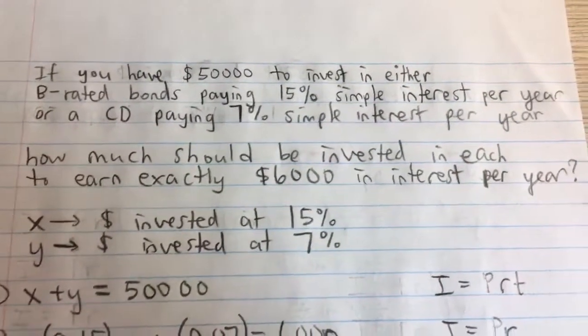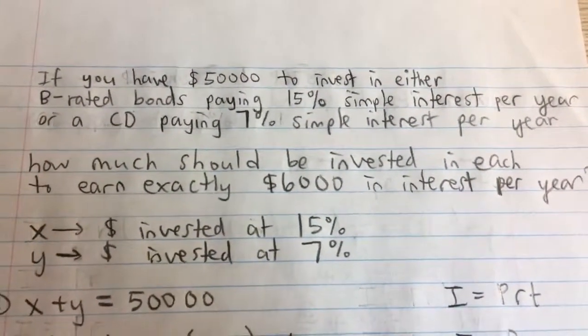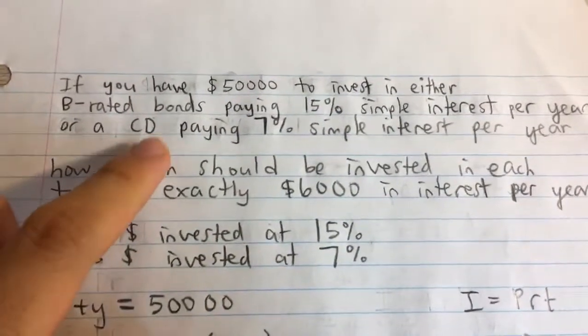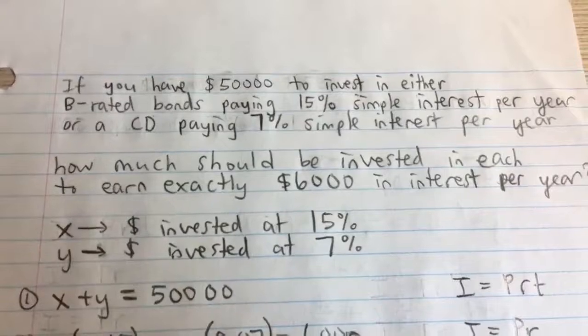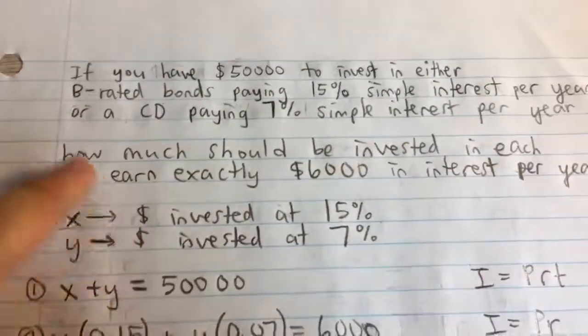Okay, so if you have $50,000 to invest in either B-rated bonds which pay 15% simple interest per year or a certificate of deposit which pays 7% simple interest per year, we're trying to find how much should be invested in each.